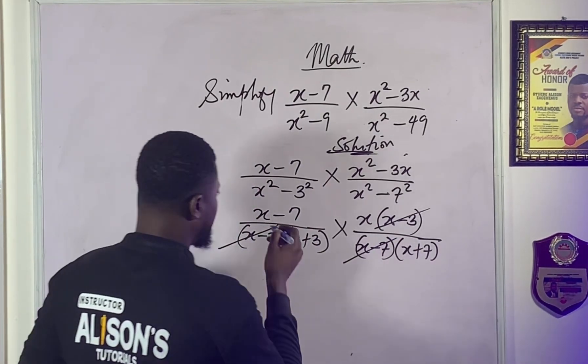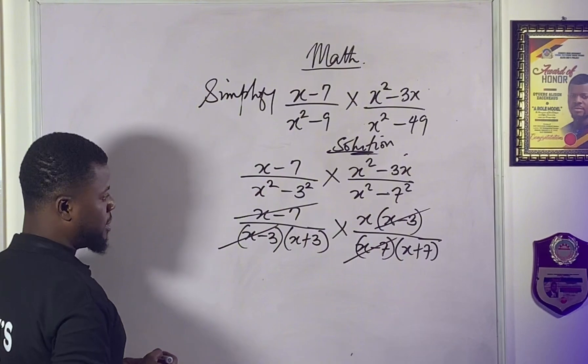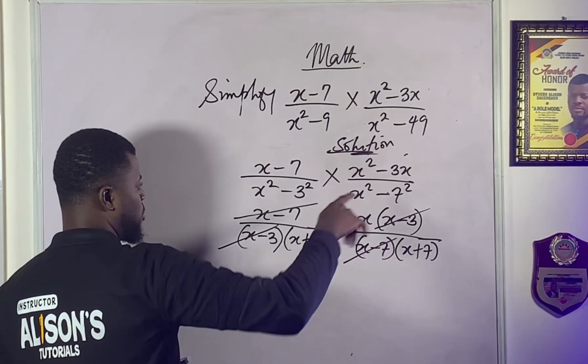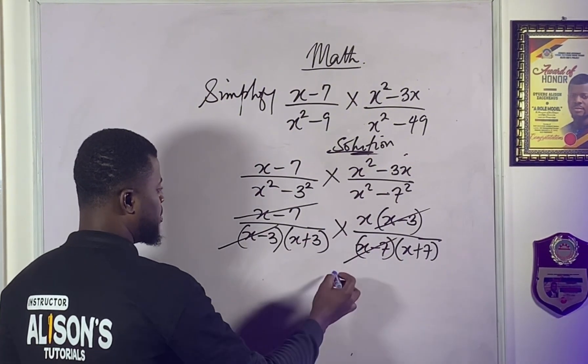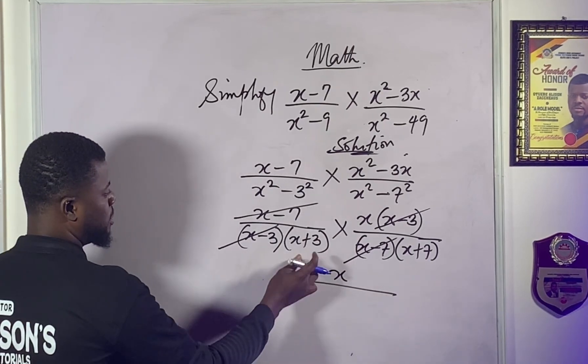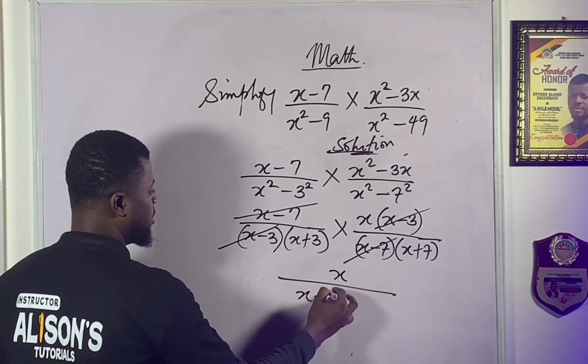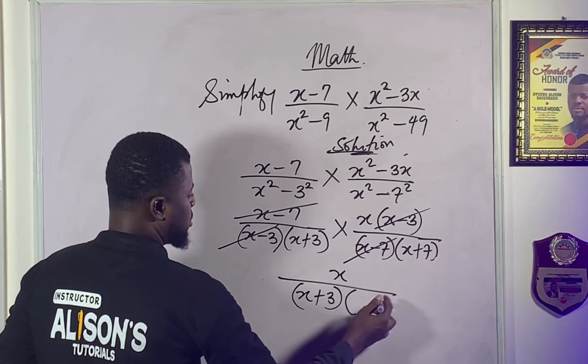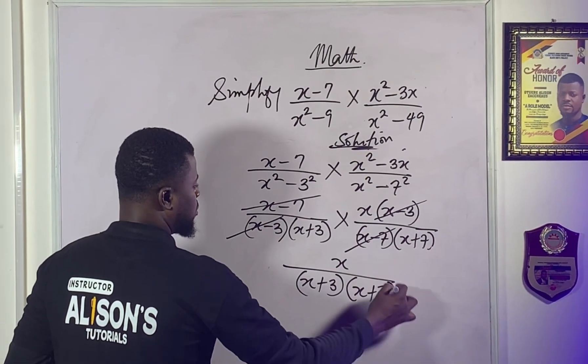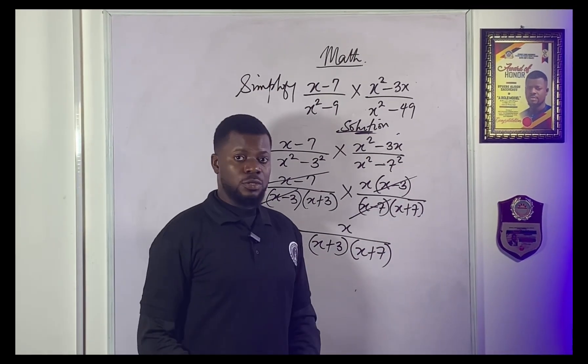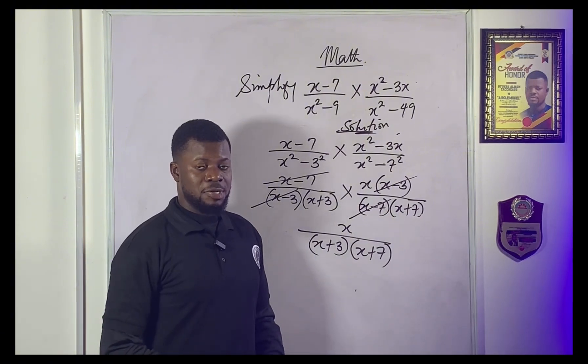This can easily go away with this. What is left on the numerator is one times x, that will be x. Over here, this is what is left: x plus three into what is left, x plus seven. Do you need to do any other thing? Of course no, so that's the answer to this problem.